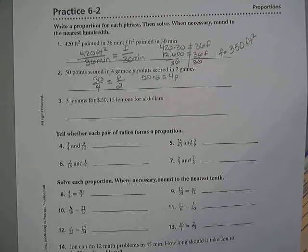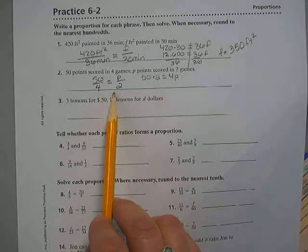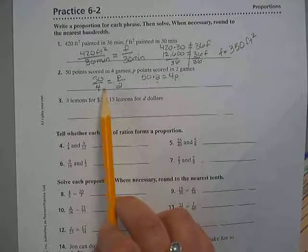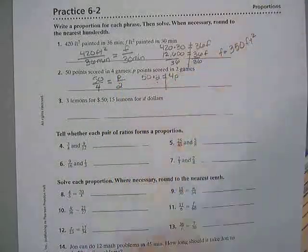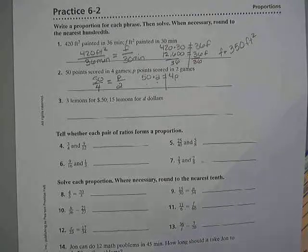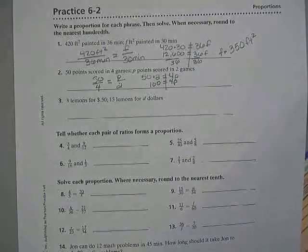So we have 50 times 2 equals 4 times P. Do you understand how to set them up? Cross products now, 50 times 2 has to equal 4 times P. What's 50 times 2? 100.